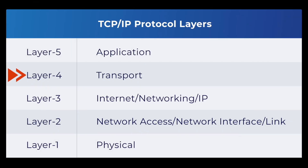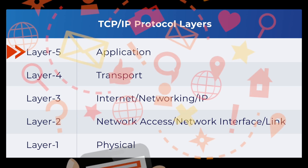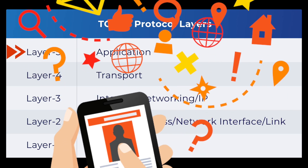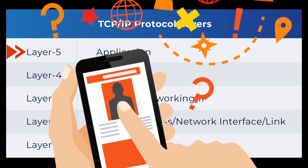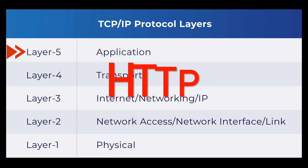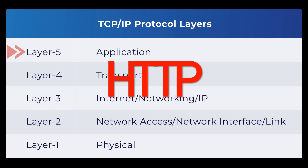The transport layer is on top of that and it controls the flow of communication between systems and assures information arrives in order. And finally, on the top is the application layer. It provides a broad range of end-user services and the functionality of the information you've received. A common application is HTTP, which is used to transport web pages over the network.